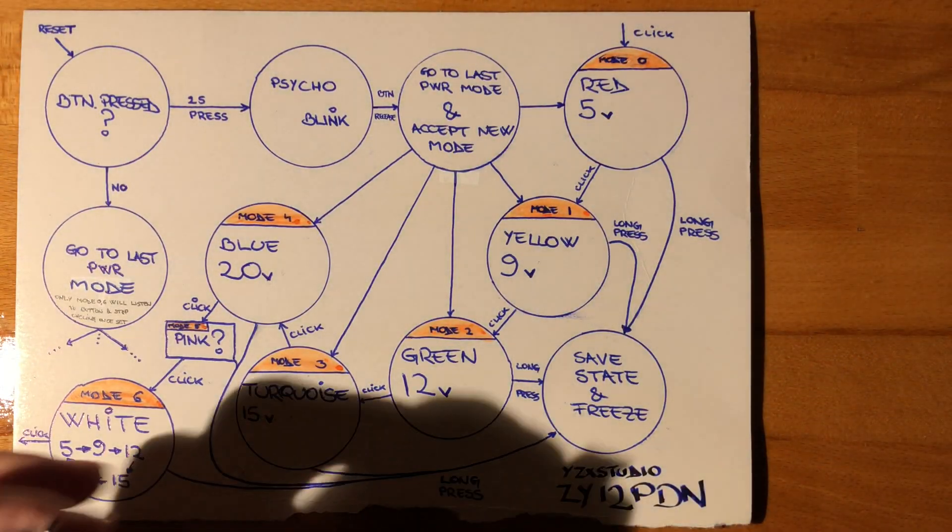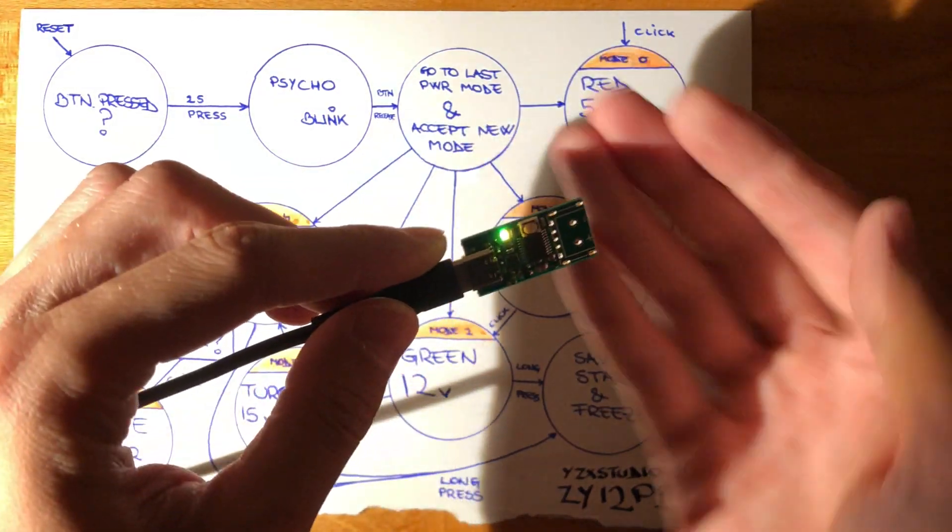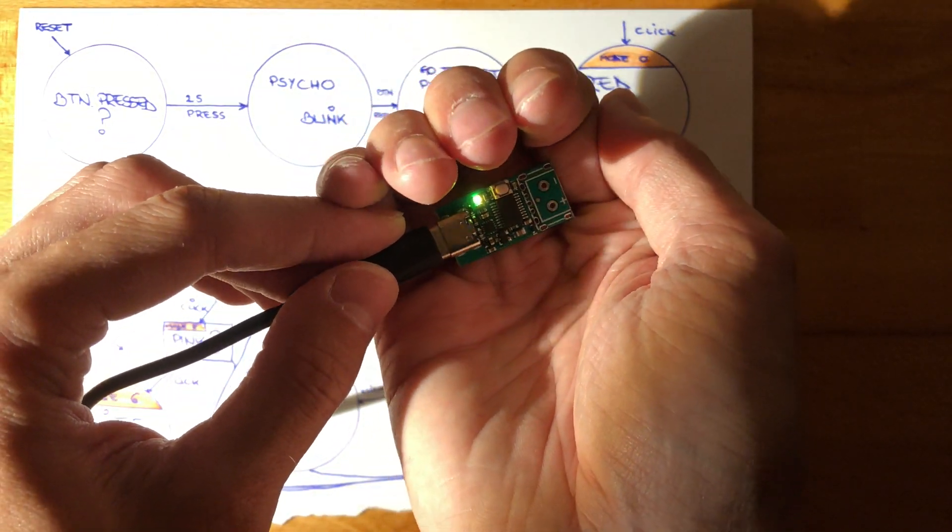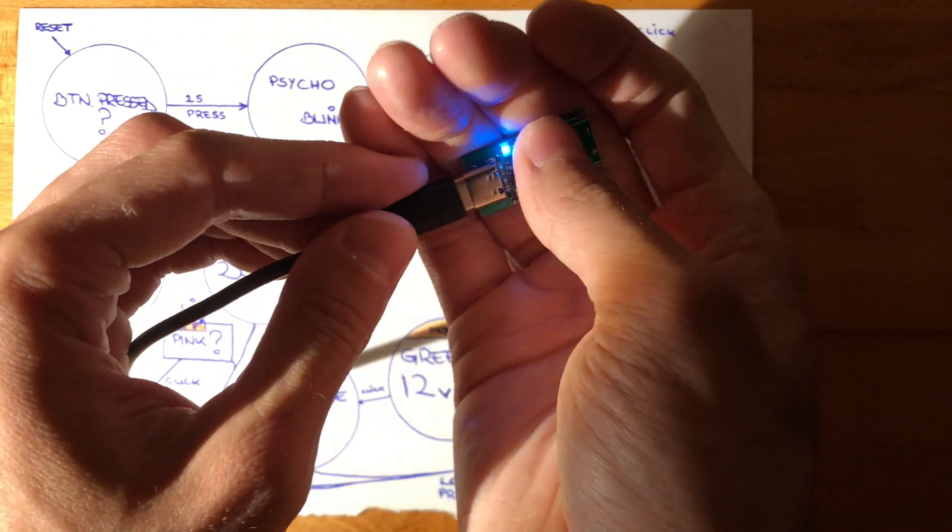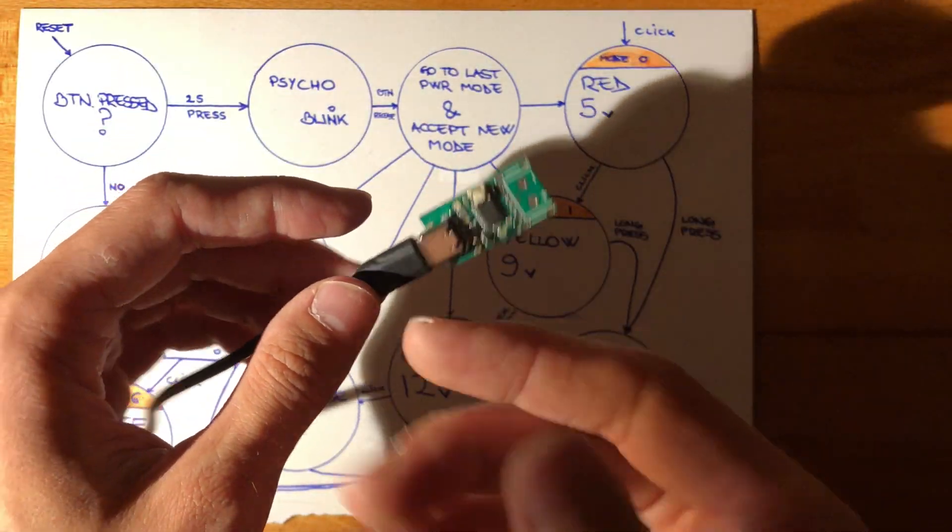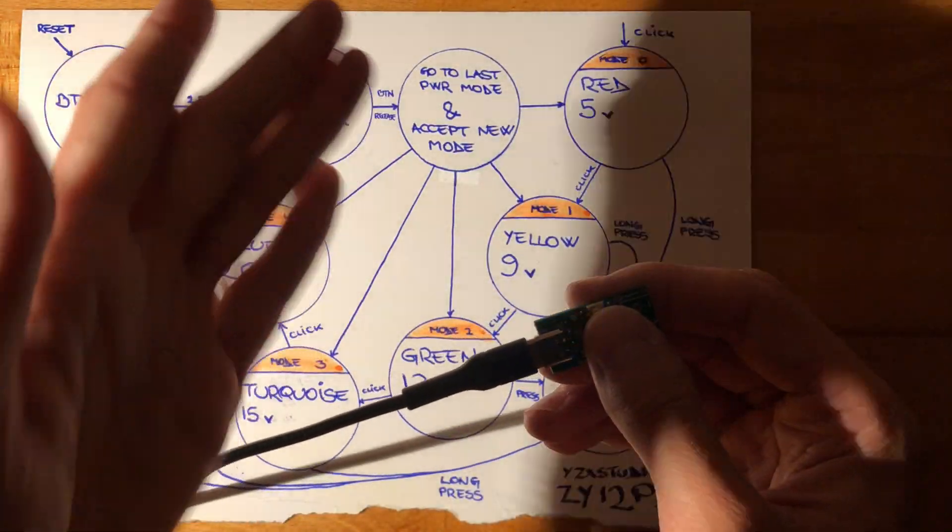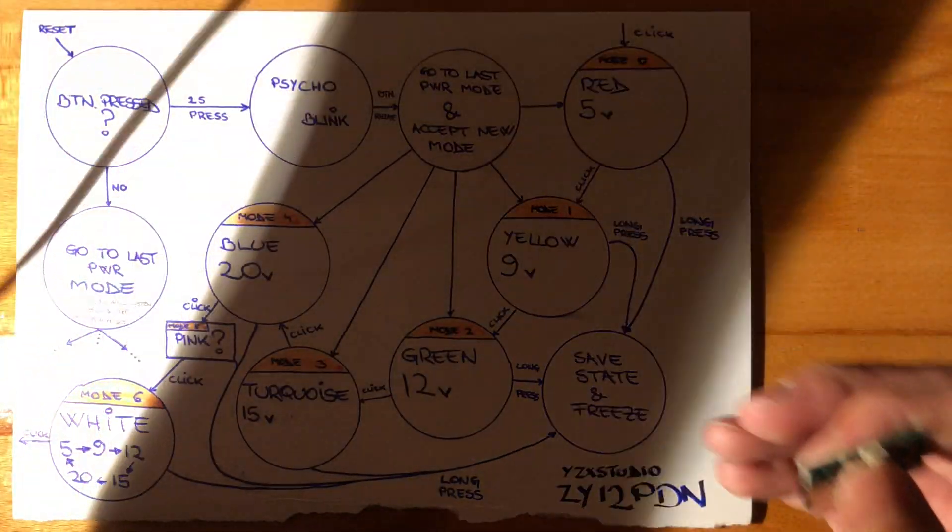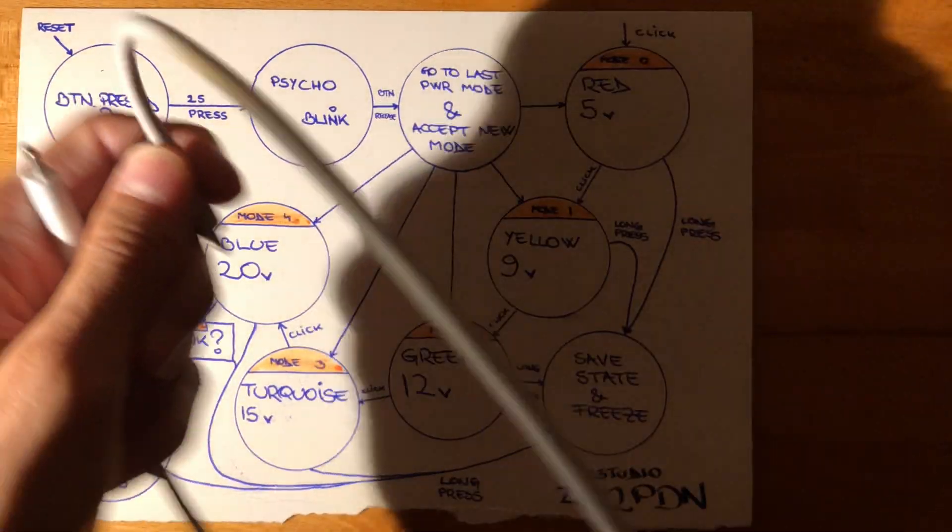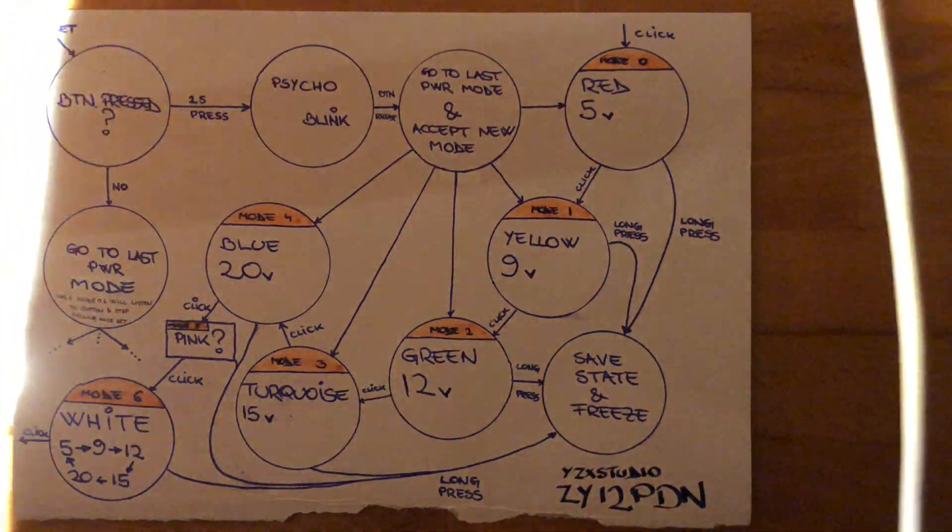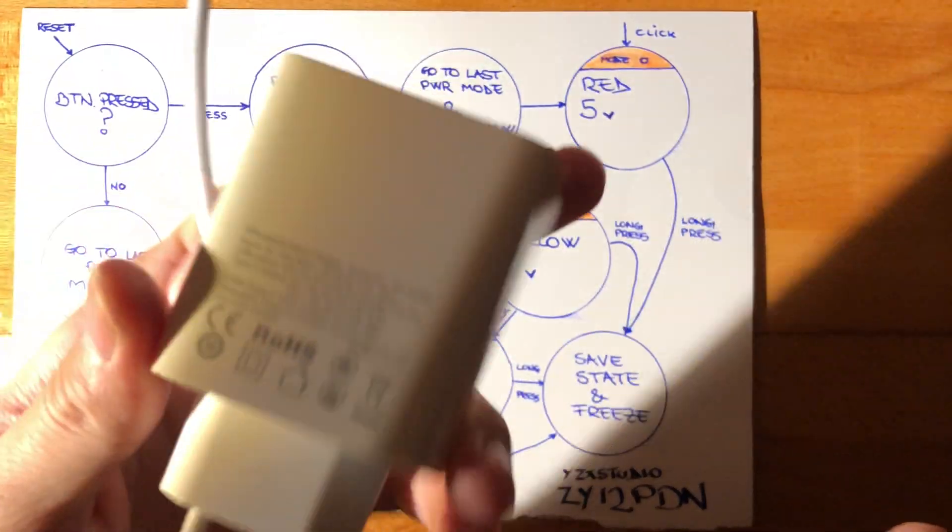If you do actually use one of these Type-A cables, like I did a year ago when I first got one of these, you'll just have it blink. It does actually detect there's no one on the channel select wire and it just blinks. You can't do much with it and it will not trigger quick charge, which is unfortunate.